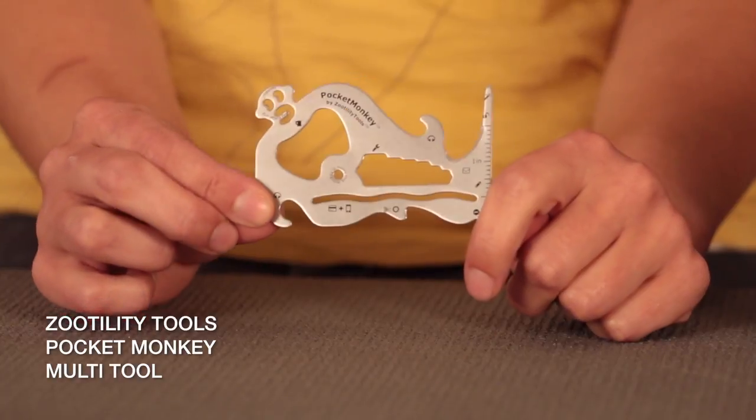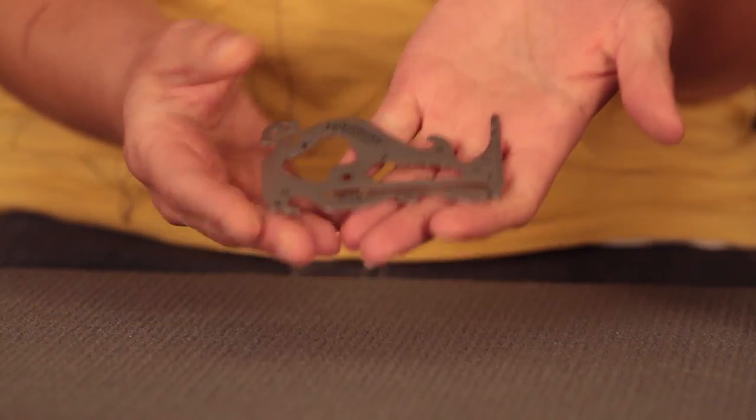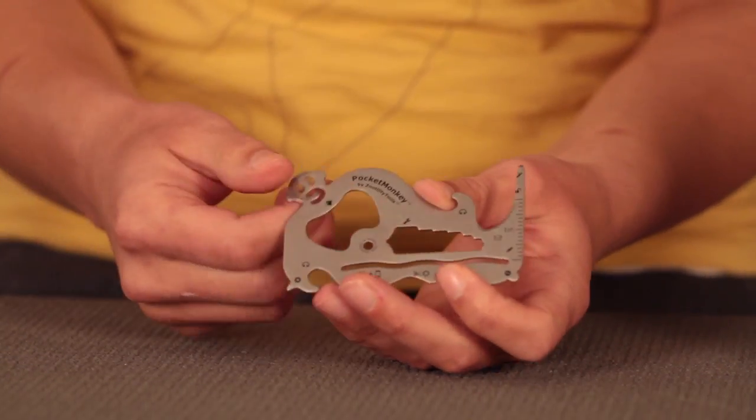This is the Pocket Monkey Multi-Tool from Zutility Tools. It is a 12-in-1, credit card-sized piece of magic. It has everything you'd ever need in your day-to-day life as far as tools go.